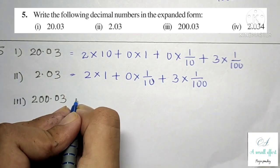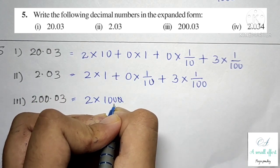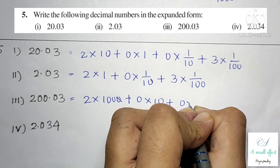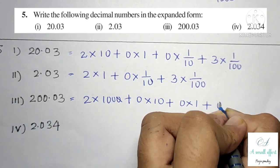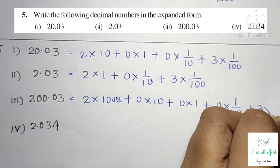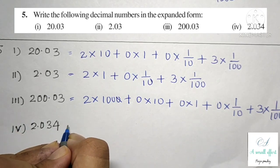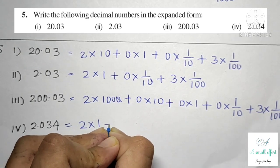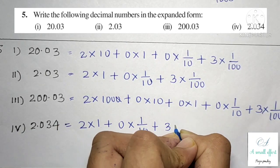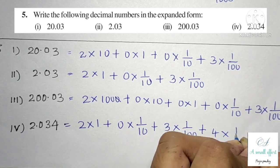Third part is 200.03: 2 × 100 + 0 × 10 + 0 × 1 + 0 × (1/10) + 3 × (1/100). Fourth part is 2.034: 2 × 1 + 0 × (1/10) + 3 × (1/100) + 4 × (1/1000).